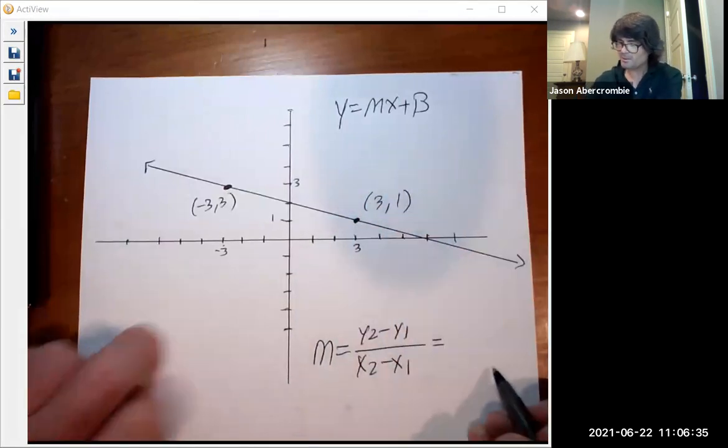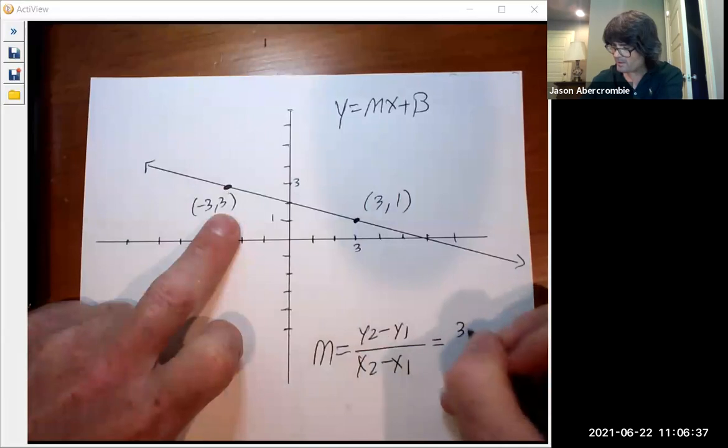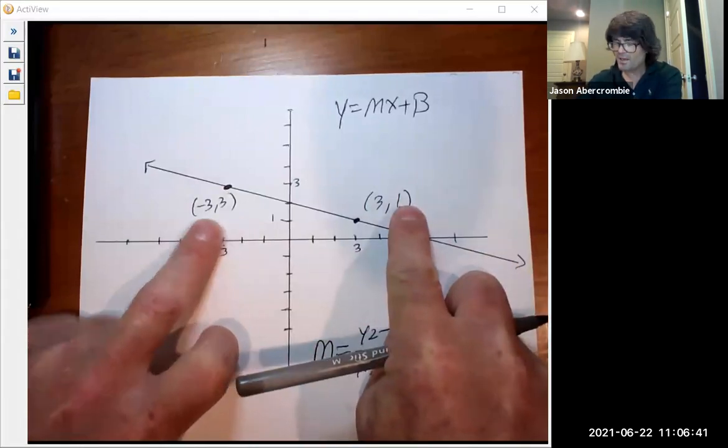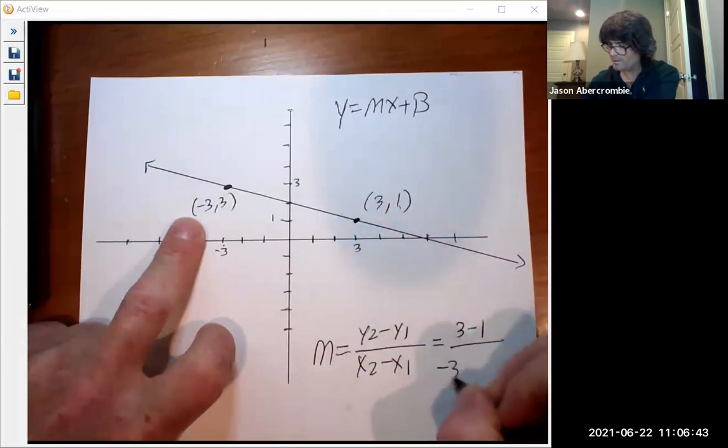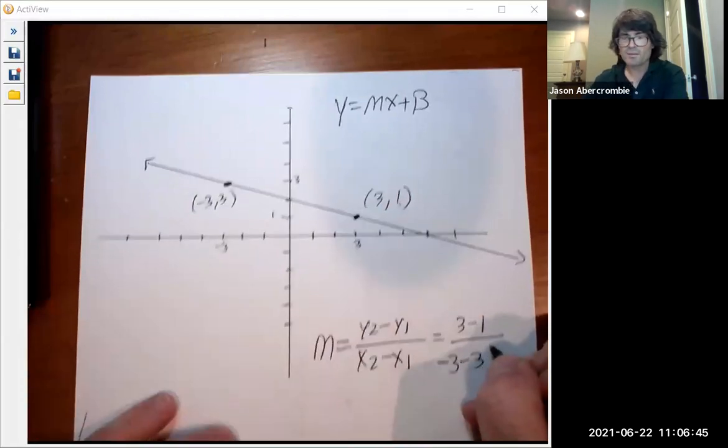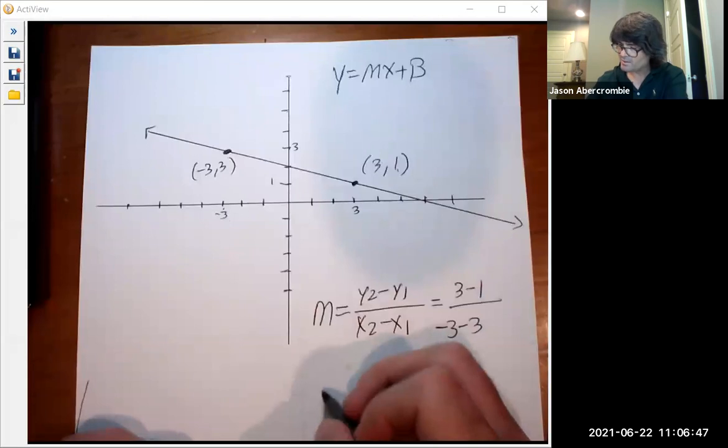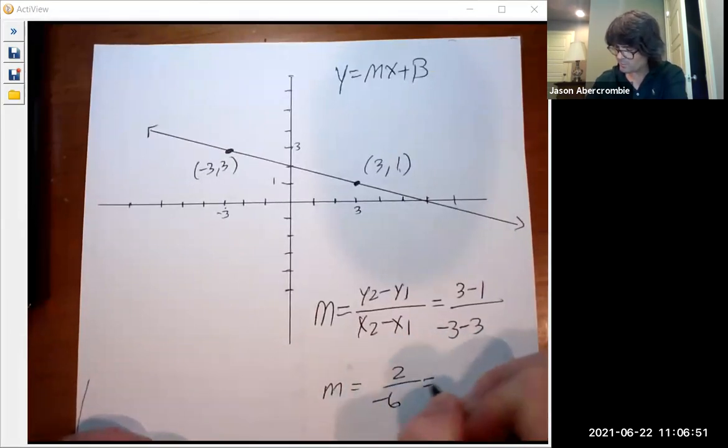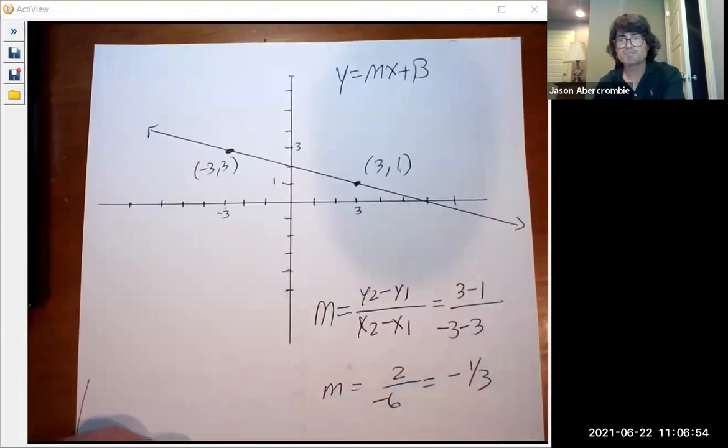So my slope is going to be, we'll do 3 minus 1 for the y's, and then negative 3 minus 3 for the x's. That's going to be a slope of 2 over negative 6, or we call that negative one-third if we reduce it.